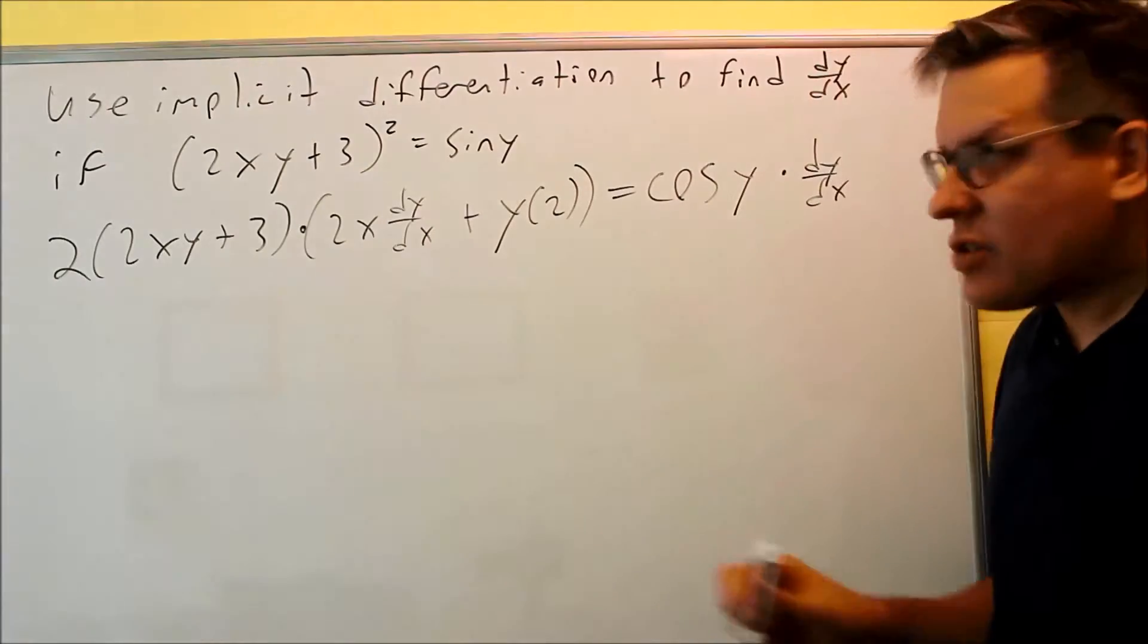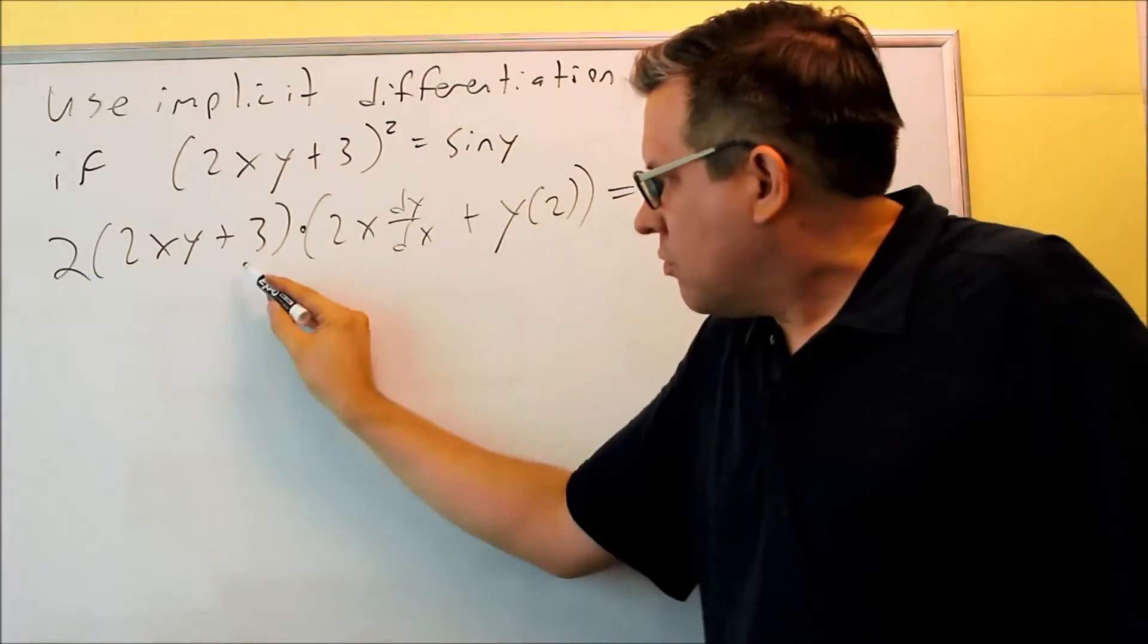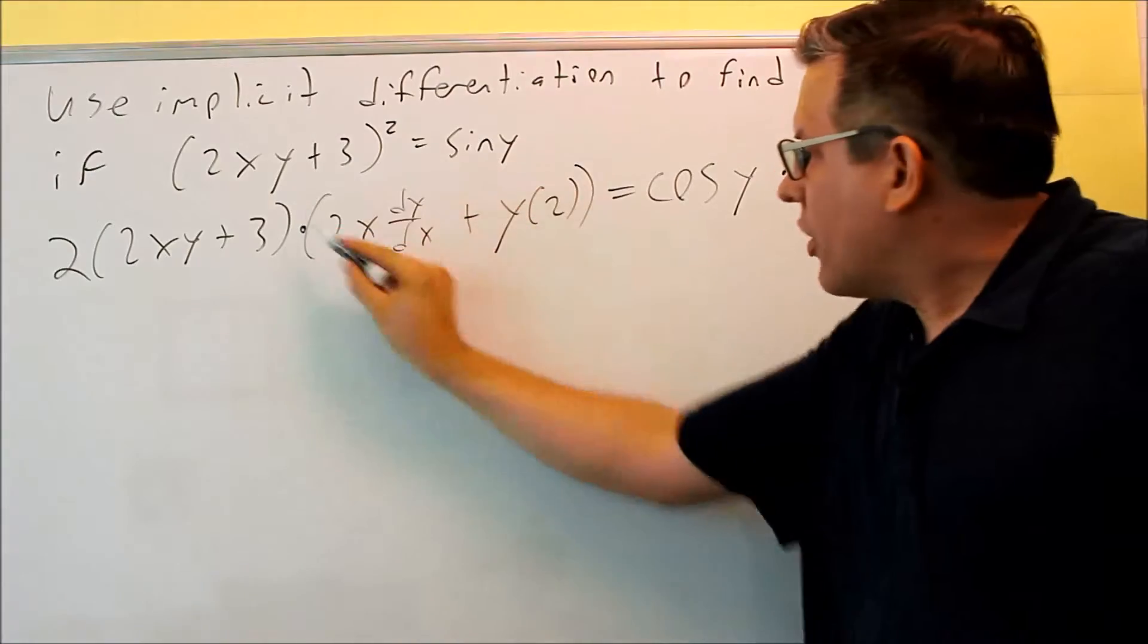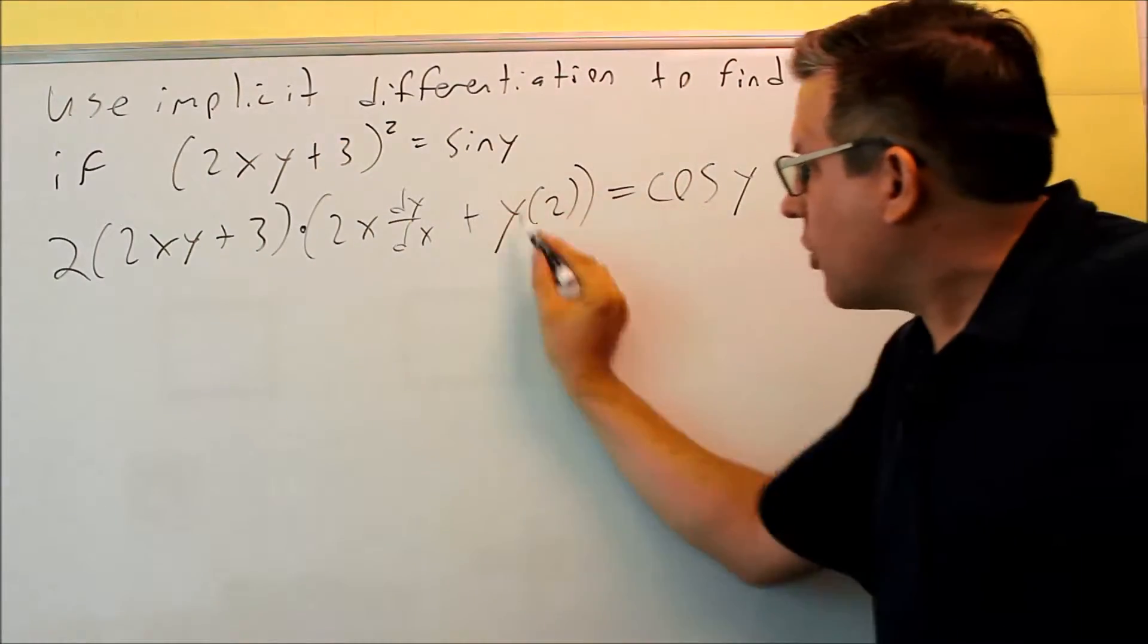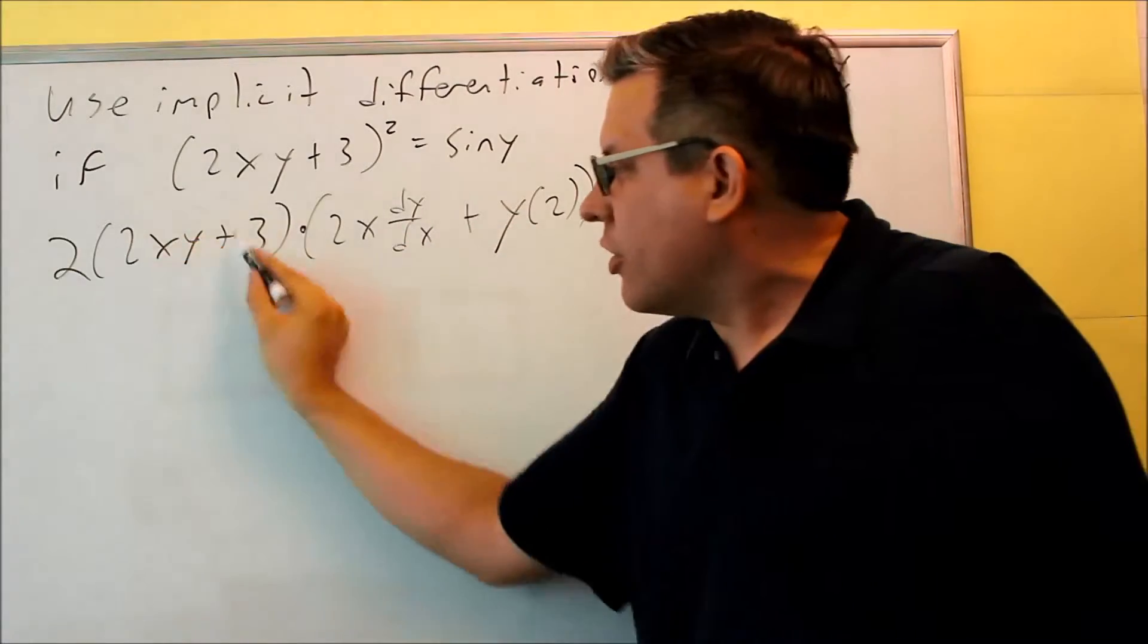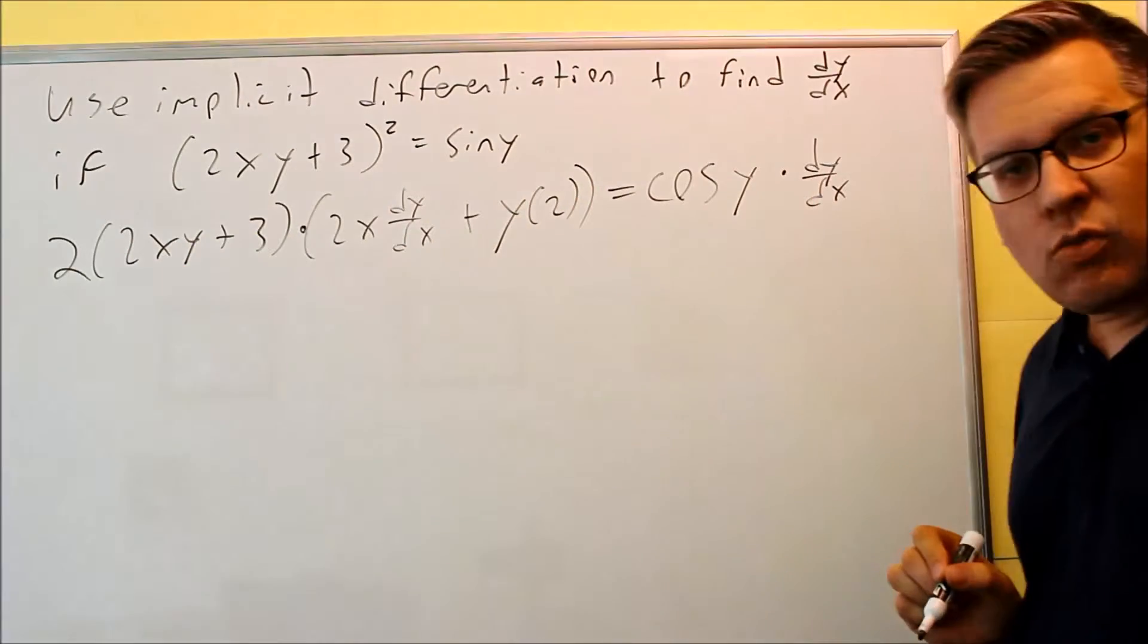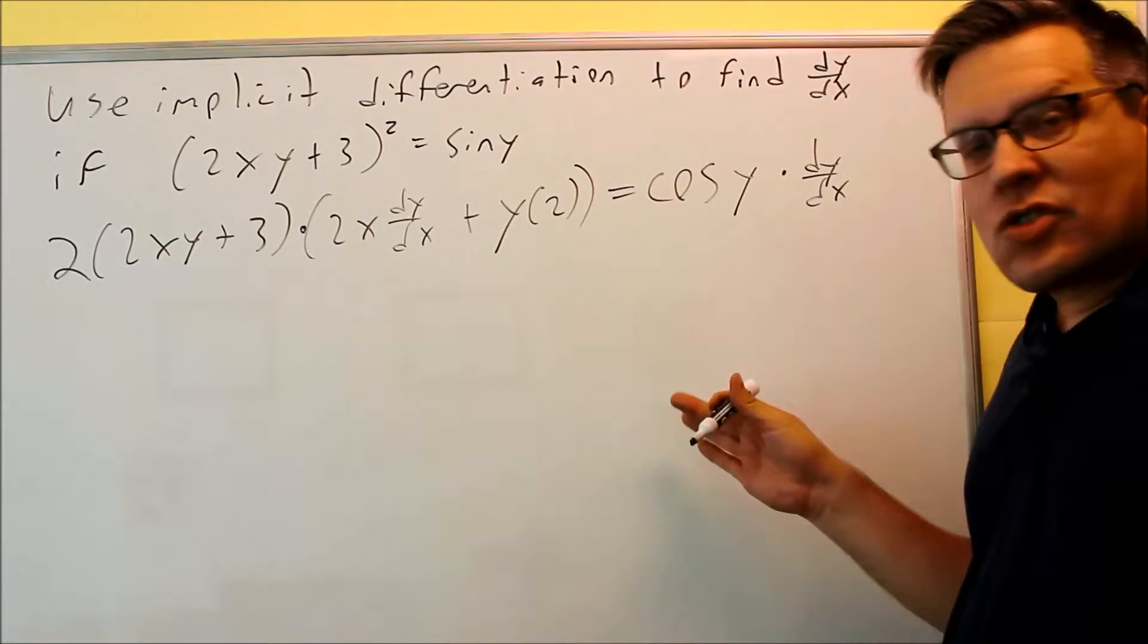Did the same thing on the left-hand side, 2 came down to the 1. All this here is the derivative of the inside. Remember, the derivative of 3 is 0, that's why you don't see that part there. We only did basically the product rule with 2xy. Now that we have this complete, what we have to do is solve for dy/dx.